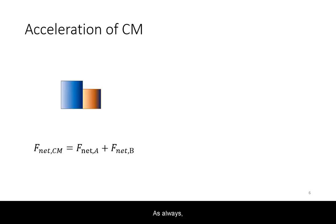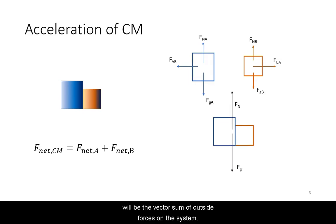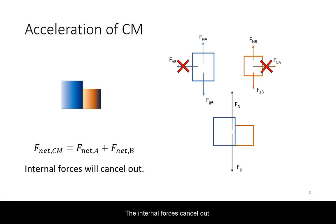As always, the center of mass can be used to approximate multiple objects as a single object. The net force on the system will be the vector sum of outside forces on the system. The internal forces cancel out according to Newton's third law.